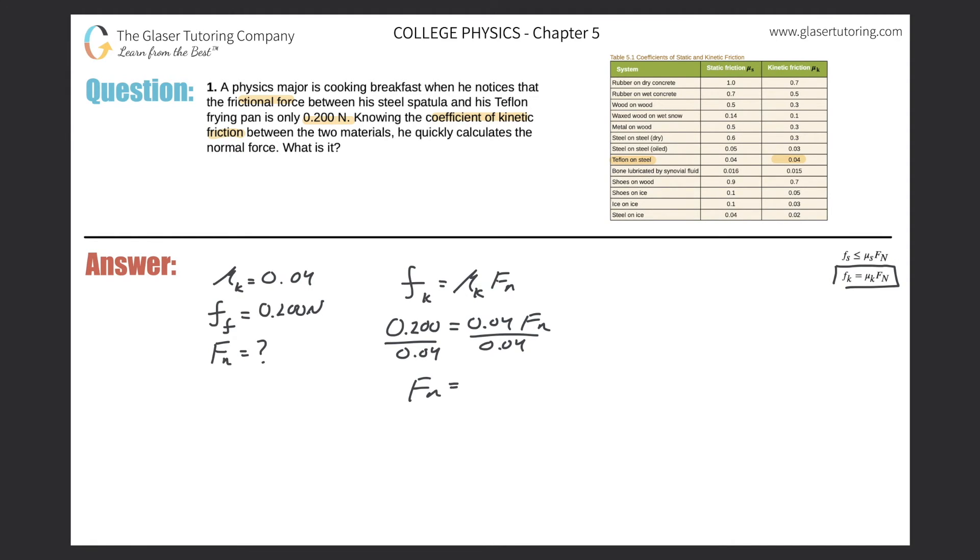The normal force here, we find it to be 0.2 divided by 0.04, and it comes out to be 5. How many sig figs? Well, the kinetic friction only has one, so I should just have one significant figure here. So 5 newtons.